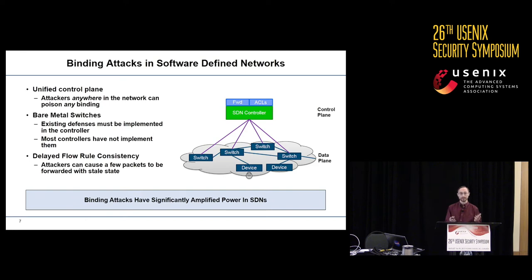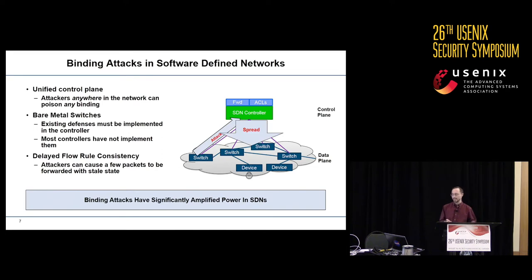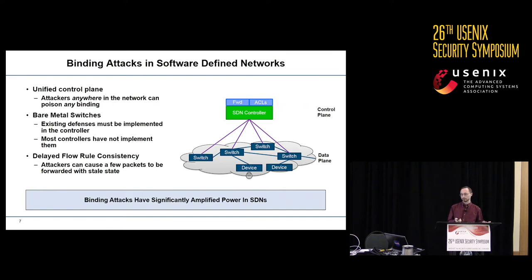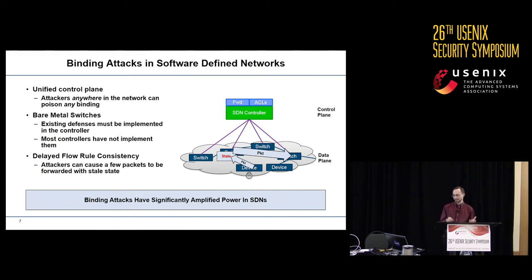All of this influences the attacks one can perform on these bindings. The unified control plane means attackers anywhere in the network can poison any of these bindings — you're not just limited to poisoning ARP on a single layer-2 switch. The simple bare metal switches mean existing defenses need to be implemented at the controller, but most controllers have not implemented any of these defenses. The delayed flow rule consistency means attackers can cause security-sensitive packets to be forwarded with stale, incorrect state. In short, binding attacks have significantly amplified power in SDNs.